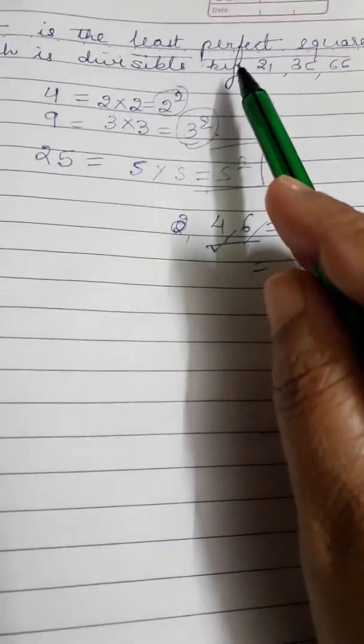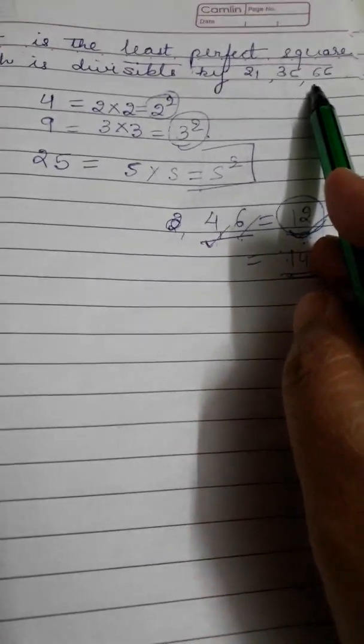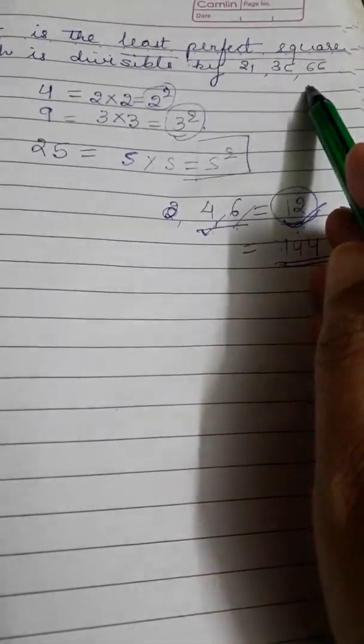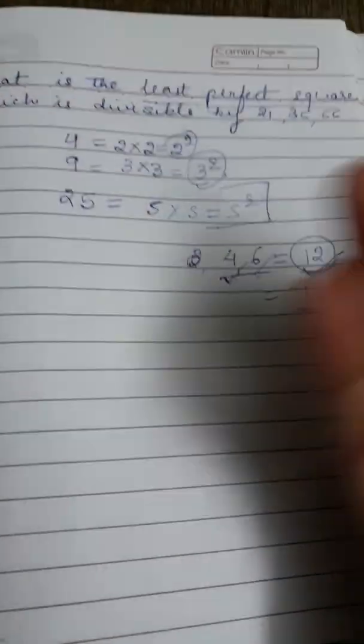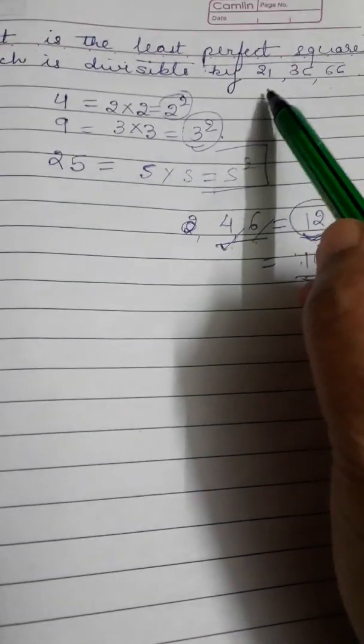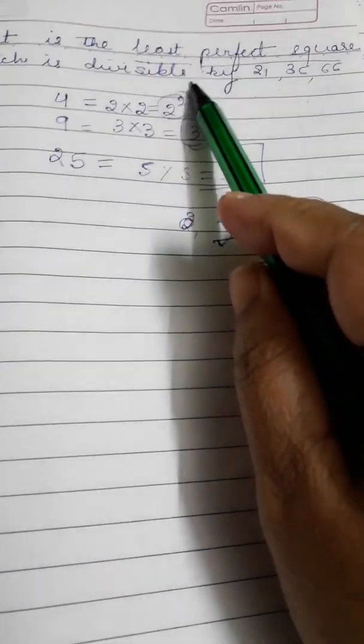Same logic will apply here. What is the least perfect square number? First I will find the least number which is divisible by these three numbers, and then I will make it a perfect square. I will find the LCM of these three numbers and then make it a perfect square.